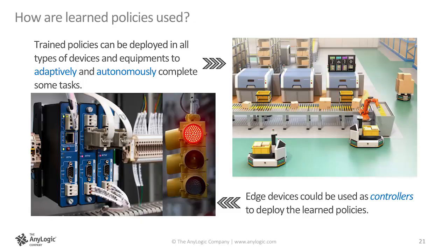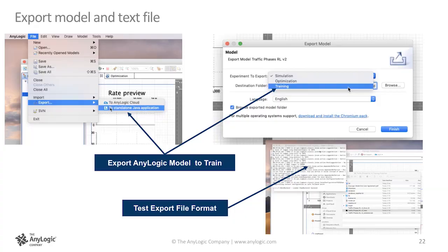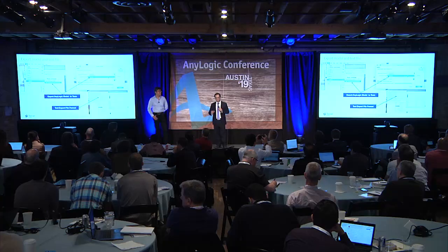There are different uses now and in the future. You can implement trained policies into adaptive autonomous equipment and tools. There are lots of edge devices and small computers that can run these trained policies — basically acting as controllers for different types of cases. Now Tai is going to show you the SkyMind Skil environment, which we also tested based on the same model by exporting the AnyLogic model.